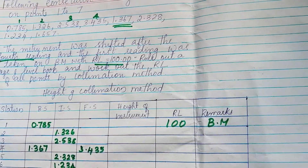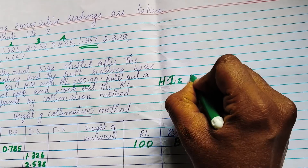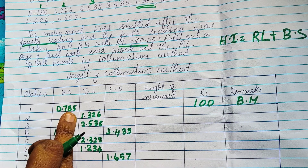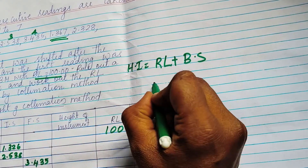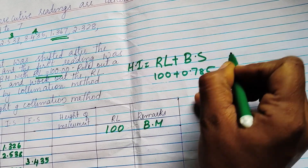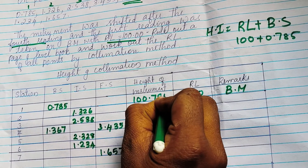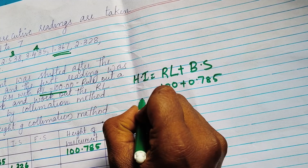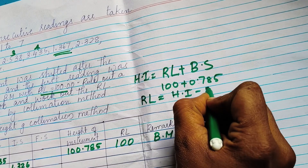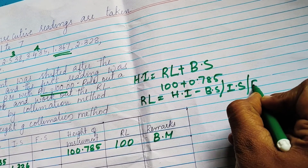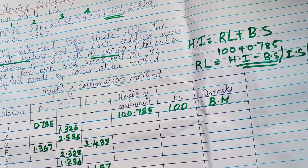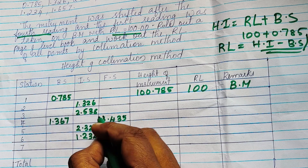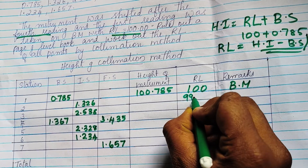We can calculate the height of instrument (HI). The height of instrument is RL plus backsight. The backsight is 0.785, so the height of instrument is 100 plus 0.785, which equals 100.785. For intermediate sights, RL is equal to HI minus the reading. So for the intermediate side: 100.785 minus 1.326 equals 99.459.